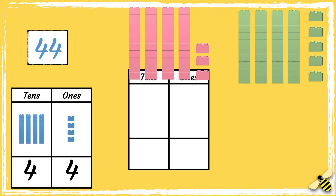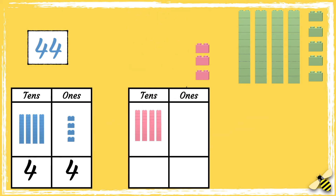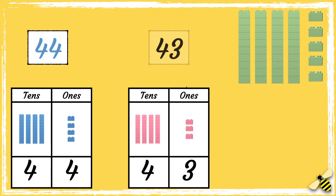Now let's count the pink bricks. There are four tens and there are three ones, so there are 43 pink bricks.